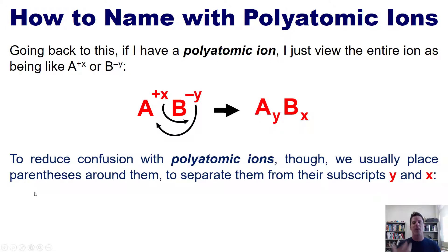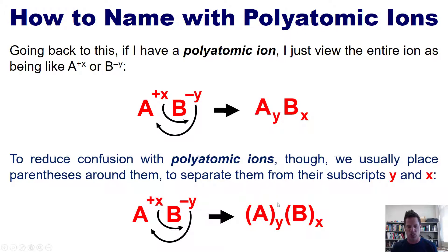To reduce confusion with polyatomic ions, we usually place parentheses around them to separate them from their subscripts y and x. For example, if A and B were both polyatomic ions, the process is exactly the same—move the x down and the y down. However, when I throw them together in a final formula, because the A and B terms might have numbers embedded in them, to reduce confusion, I wrap parentheses around the A and around the B before slapping the subscripts next to them. I'll show you how to do this with an example.